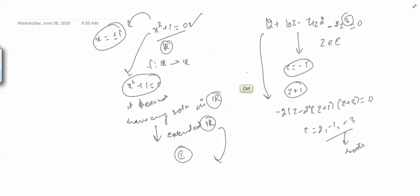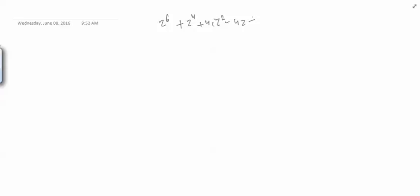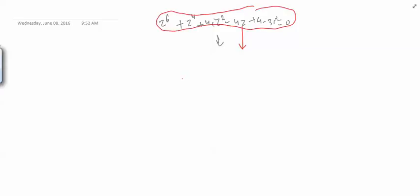Now suppose we have an equation like z⁶ + z⁴ + 4iz² - 4z + 4 - 3iz = 0, with coefficients from complex numbers. We don't even know whether this equation has a complex root. You might worry that we'd have to keep extending from the complex system to some further system, then another, and so on — a scary prospect.